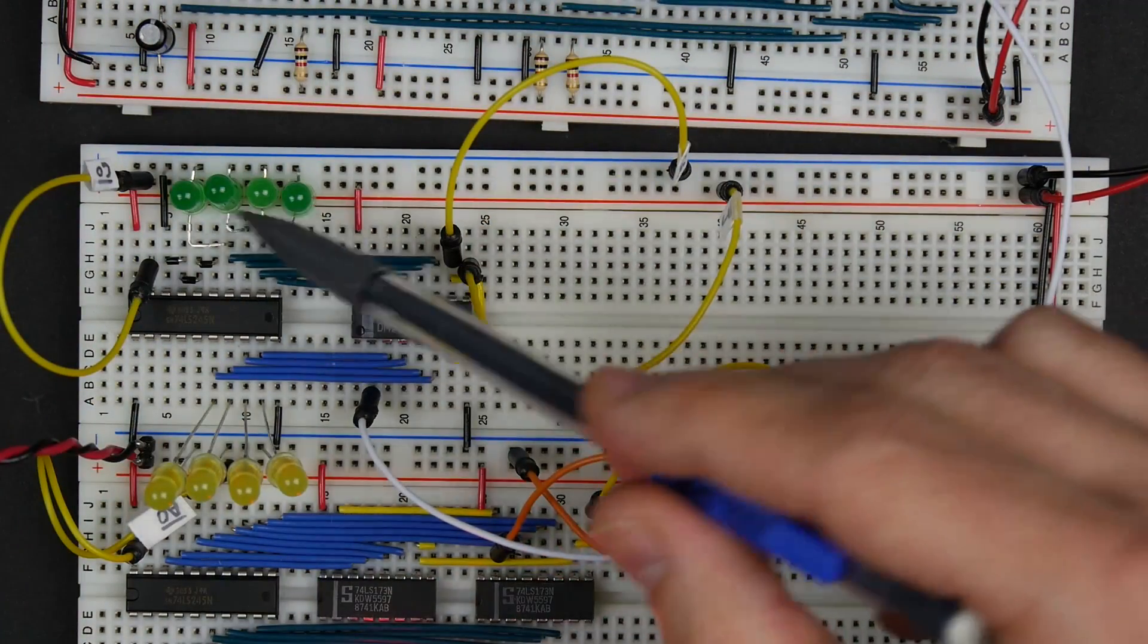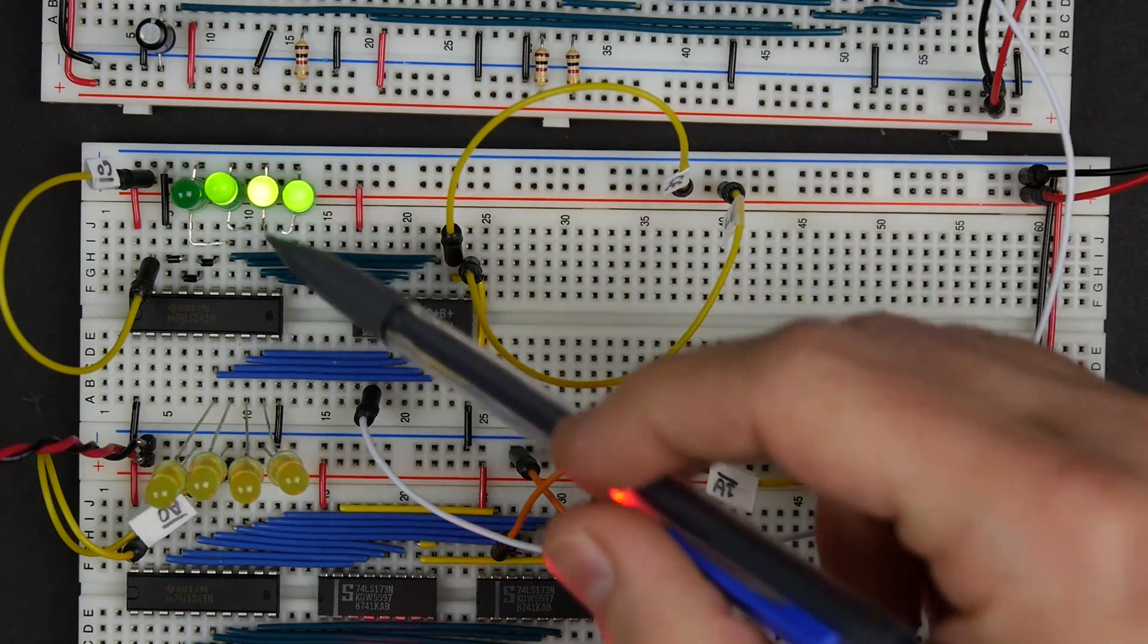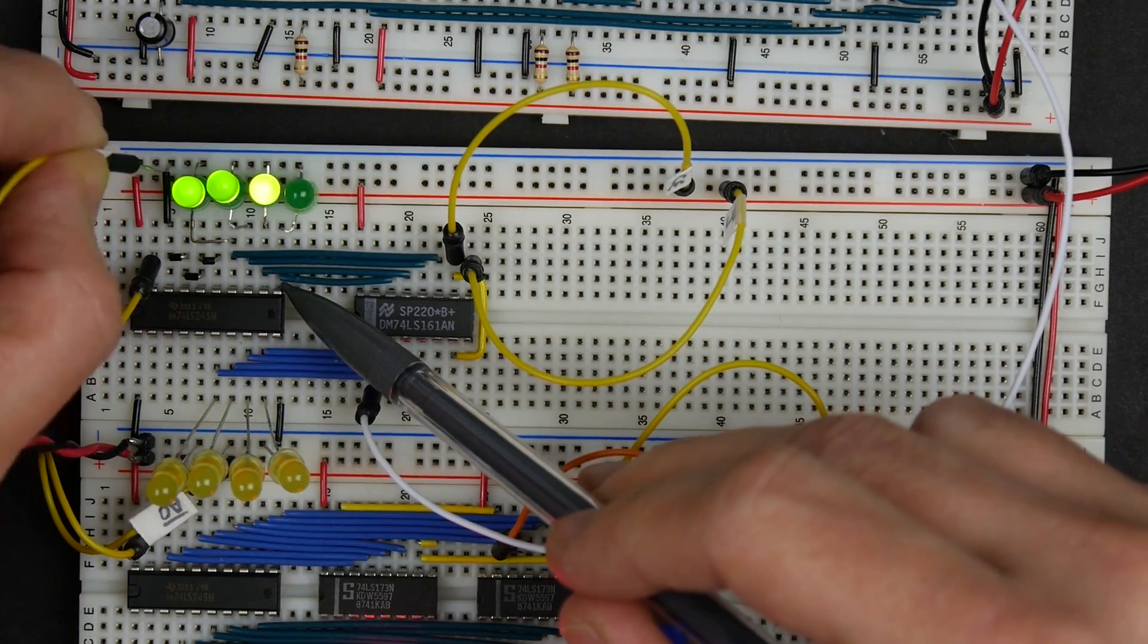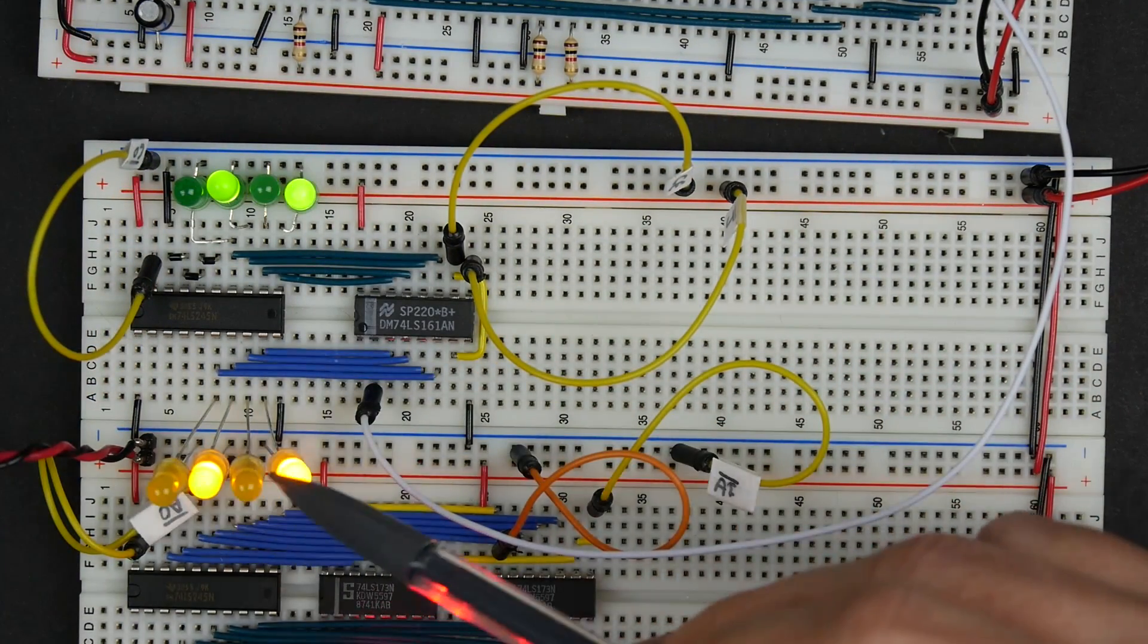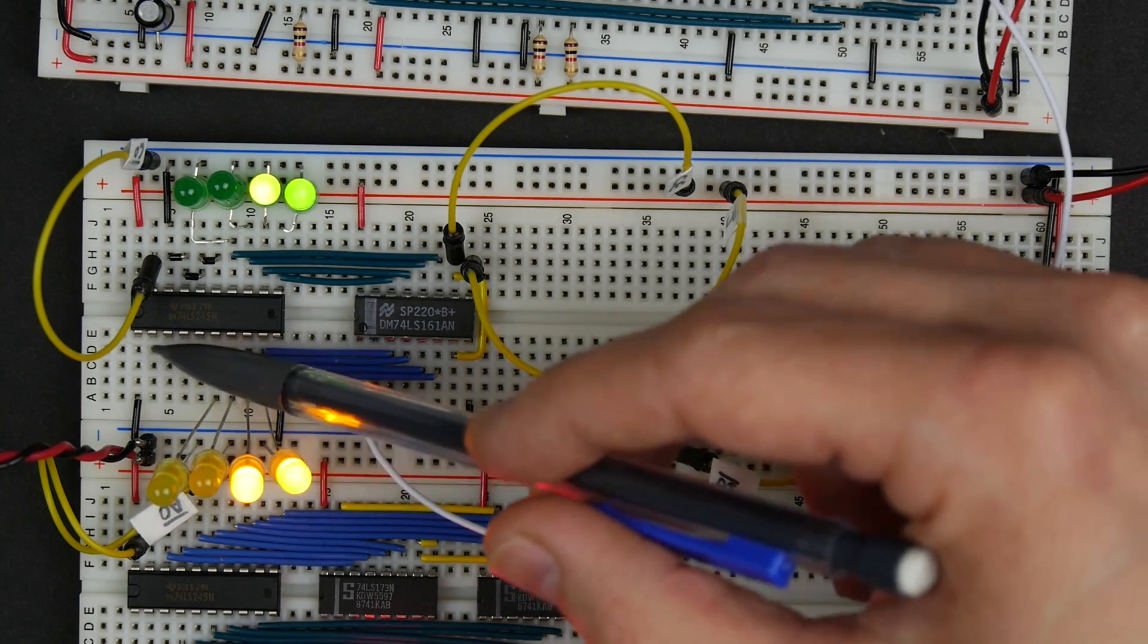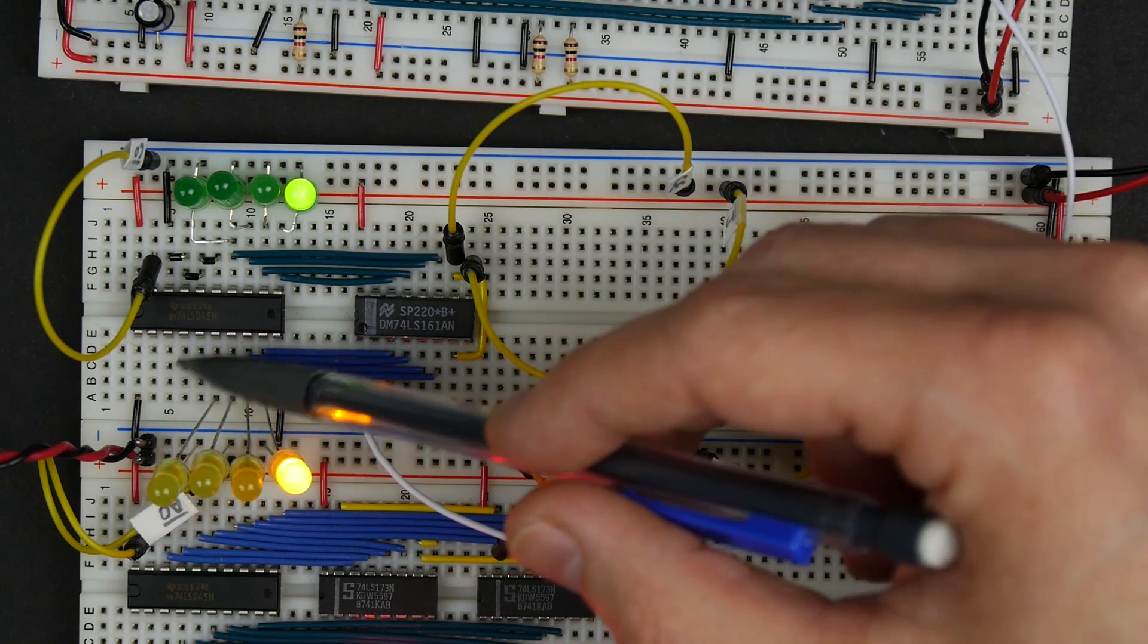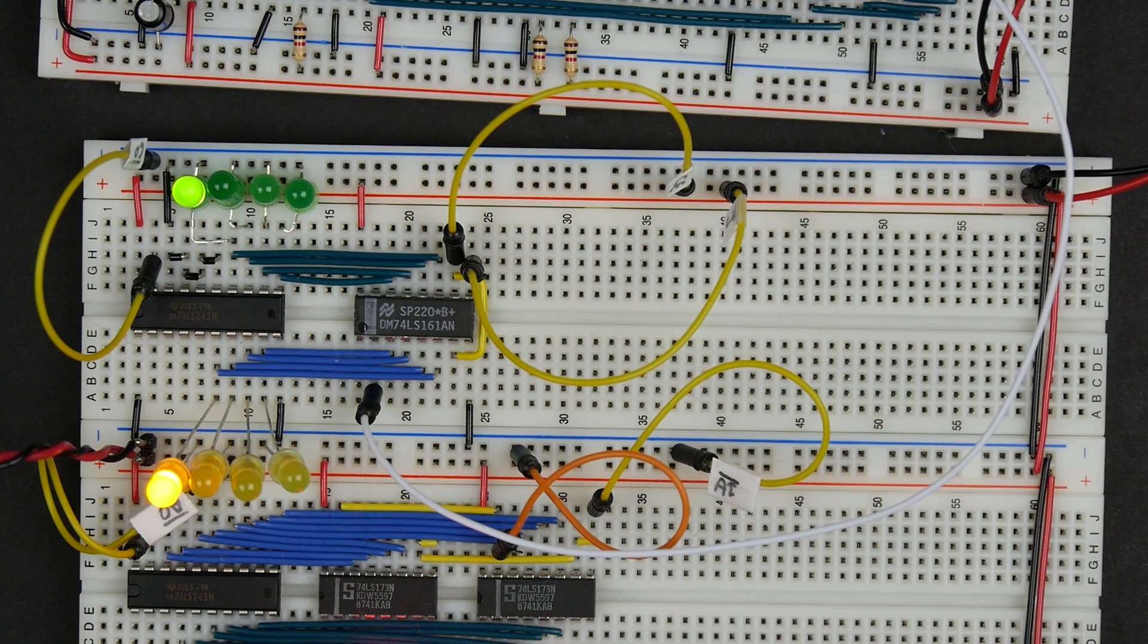So now when we're outputting our program counter, whatever it is, if we enable the counting, when we output this program counter, we're outputting the lower four bits, but then these upper four bits, we'll be outputting zeros rather than ones or something else. Doesn't really matter, but it's nice to have those tied to ground. And I think that should do it for the program counter.